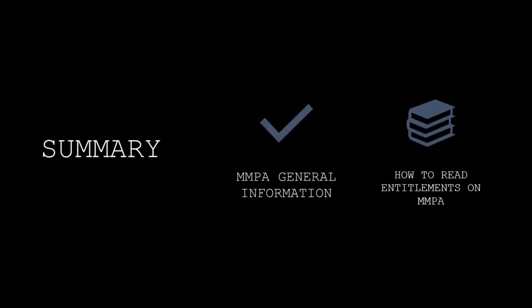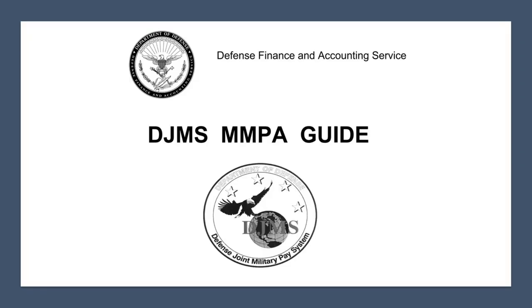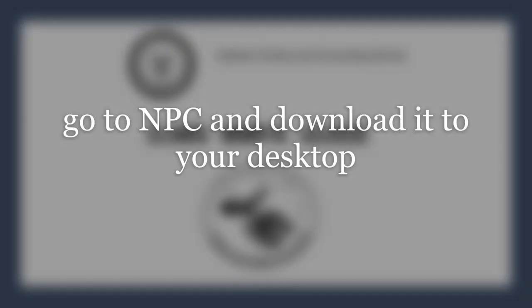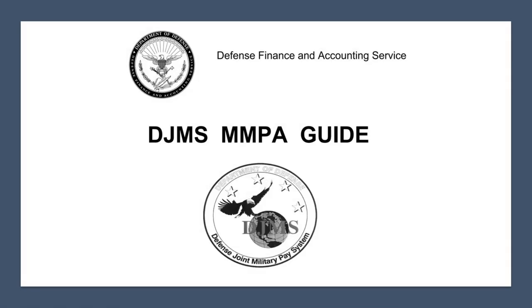That concludes our training on entitlements and FIDs, and that wraps up our training on MMPA for beginners. To summarize: you should have learned MMPA general information and how to read entitlements on MMPA. Those are the two things you should have accomplished. You now have the basic knowledge on MMPA and can continue to build on it. The most important resource is the DJMS MMPA guide — that is your reference. Everything I learned about MMPA came from this guide.